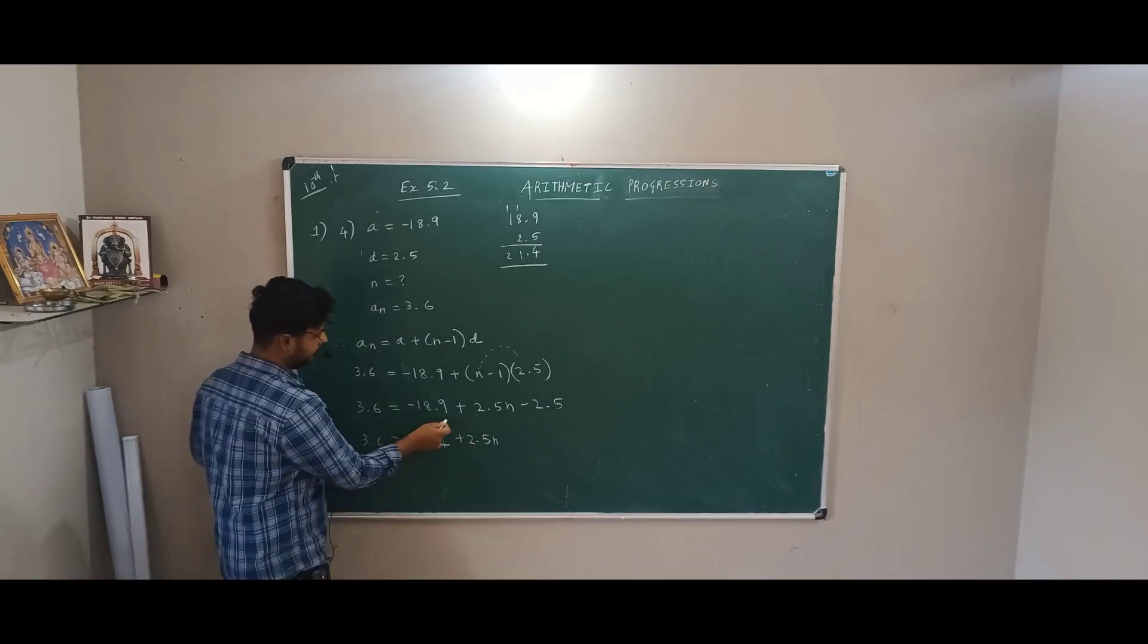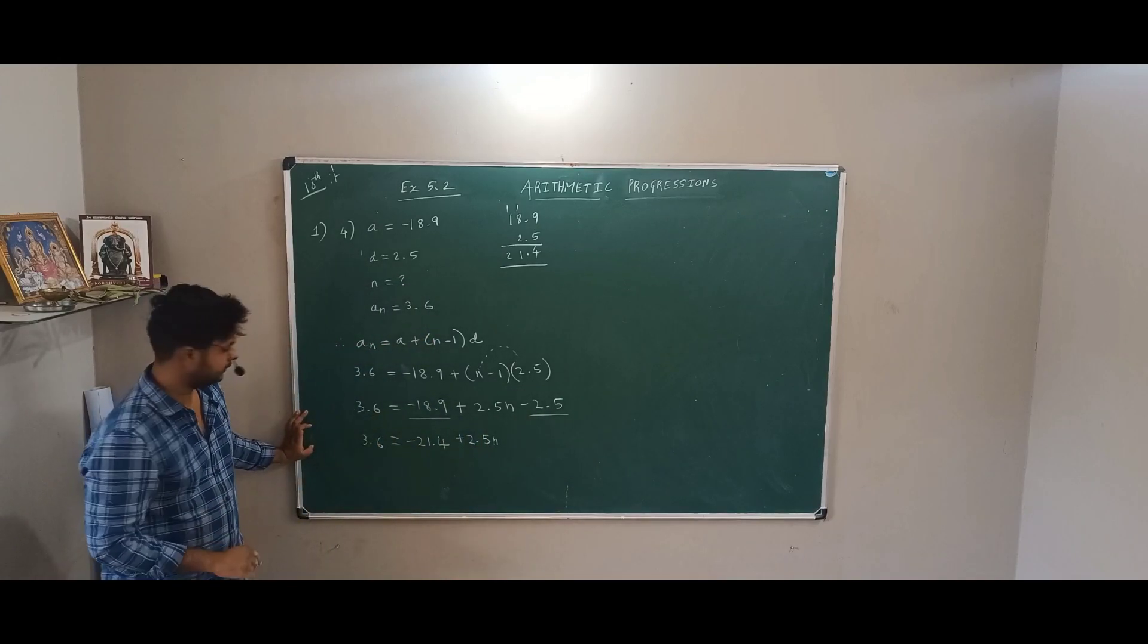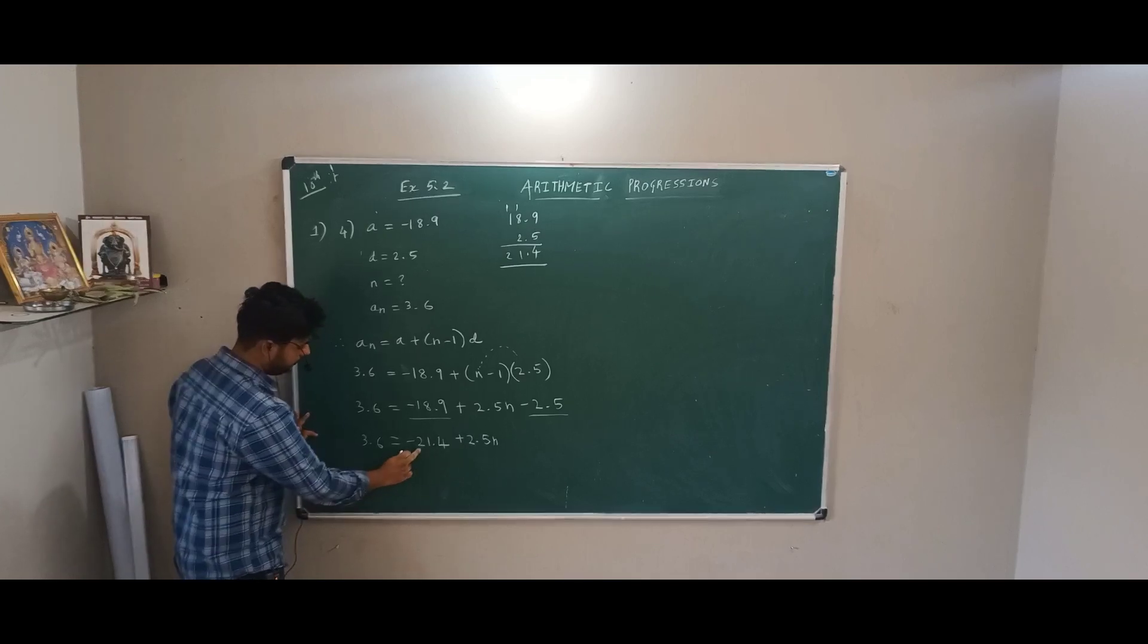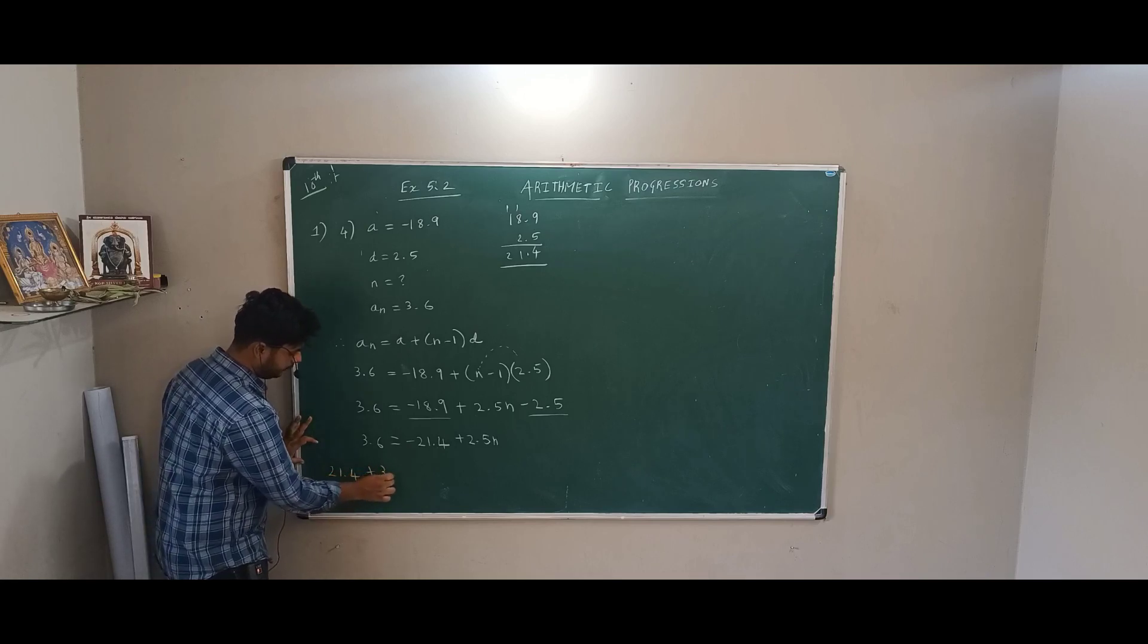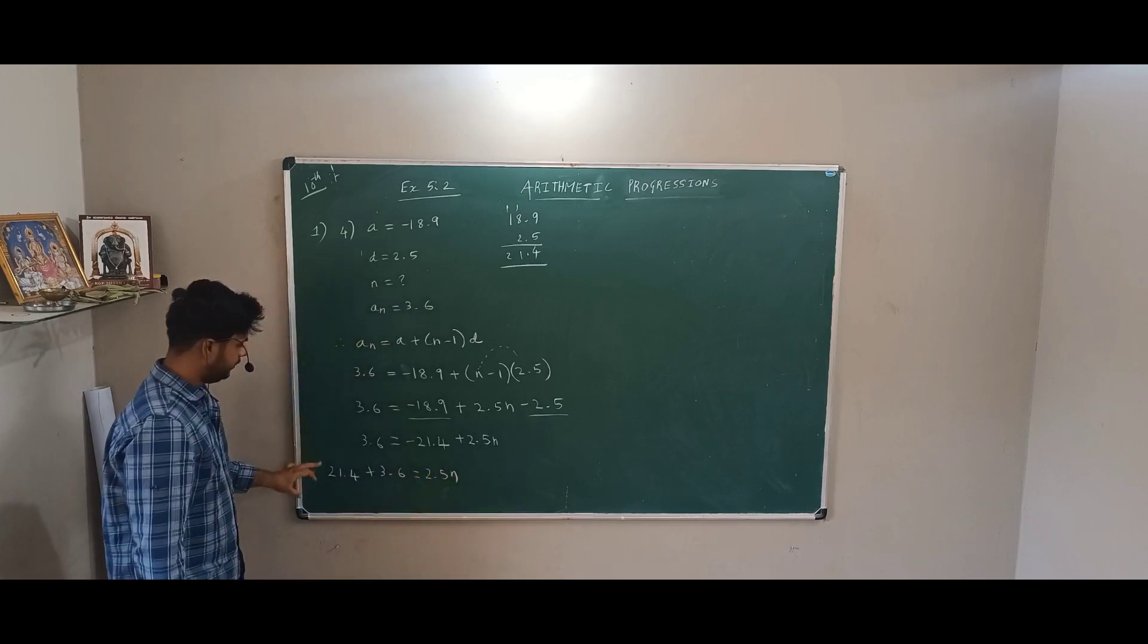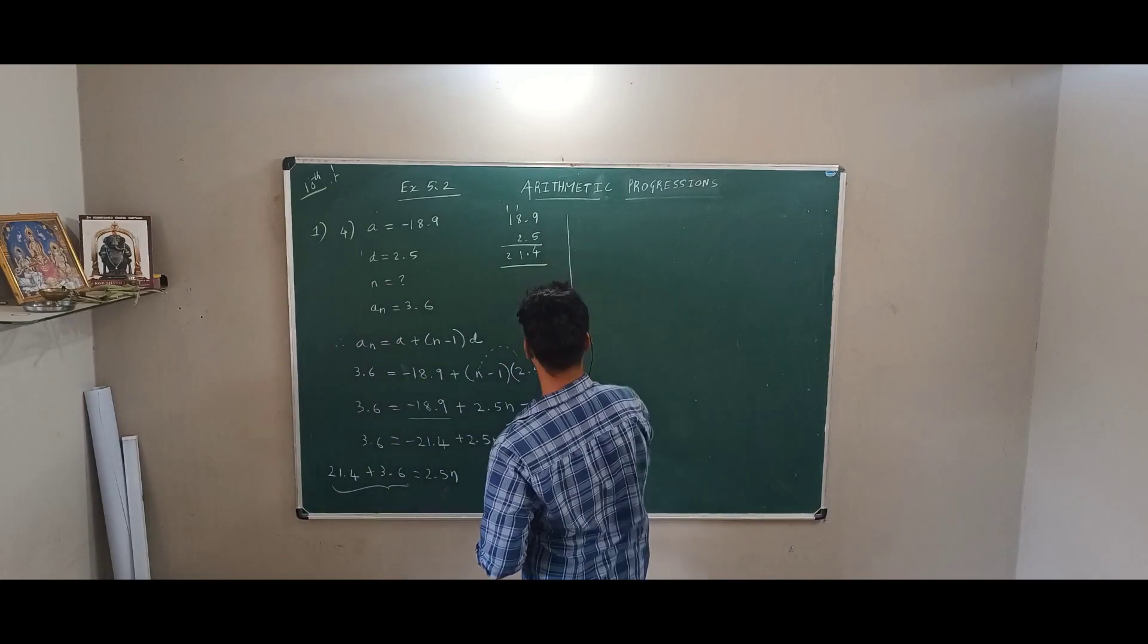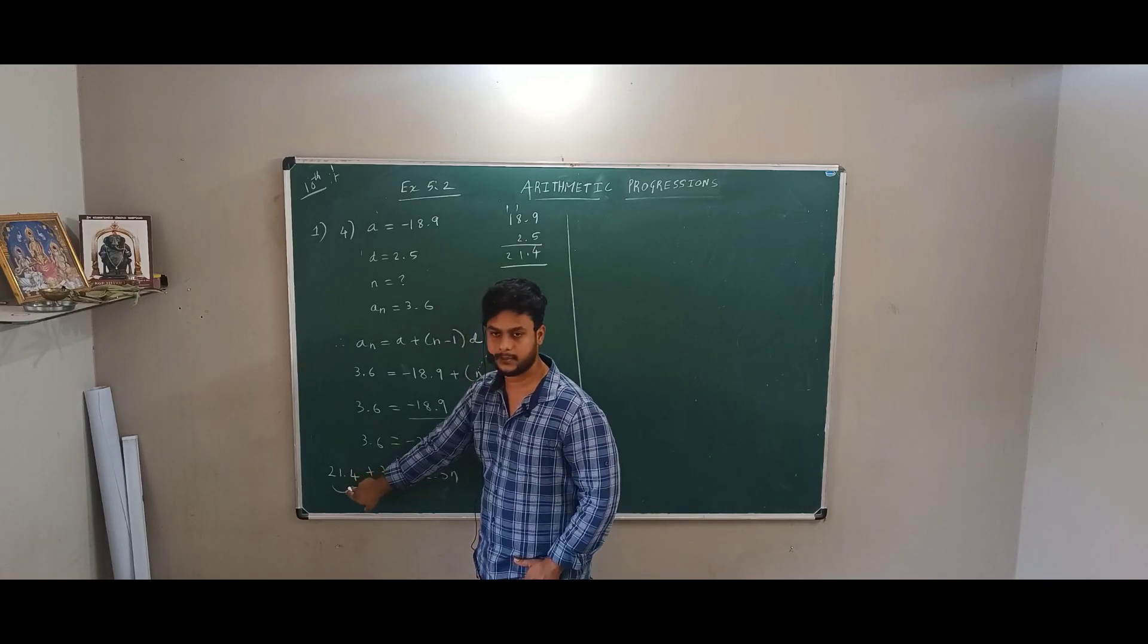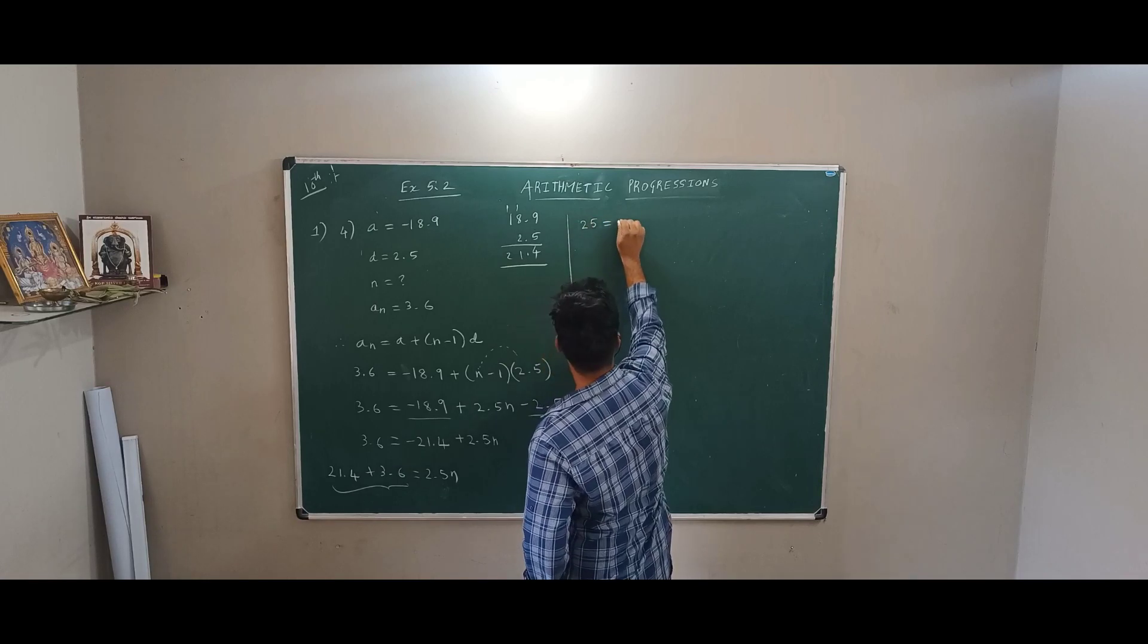What I will get? 21 point 4 plus 3.6 is equal to 2.5N. Now if I add 21.4 and 3.6, what I will get? 21.4, 0.6, 22, 22 plus 3, 25 is equal to 2.5.